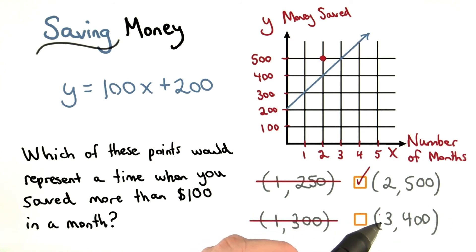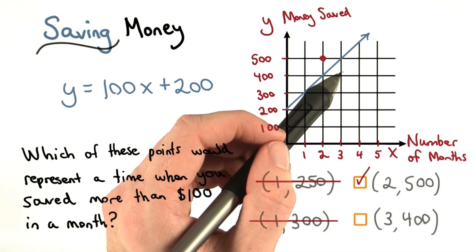This point means that after three months, I saved $400. That would put me here.